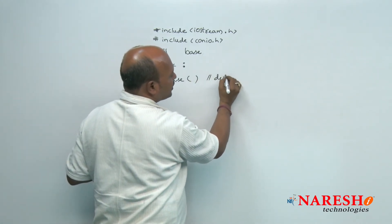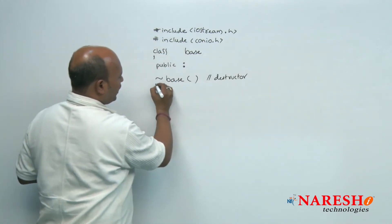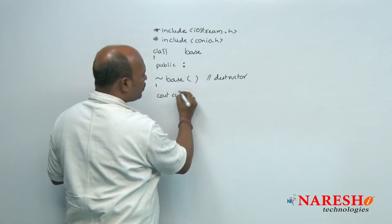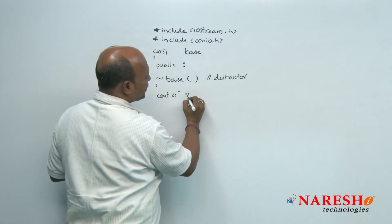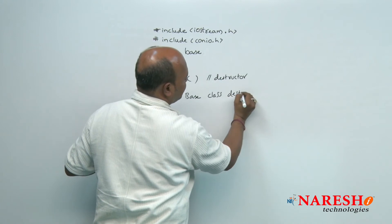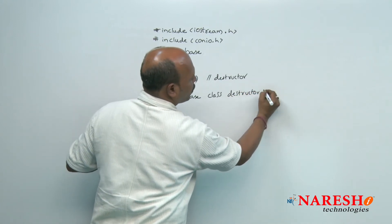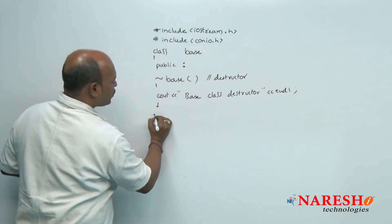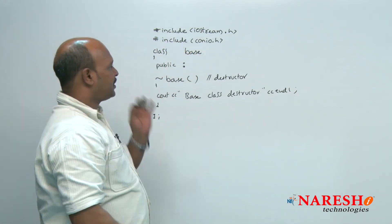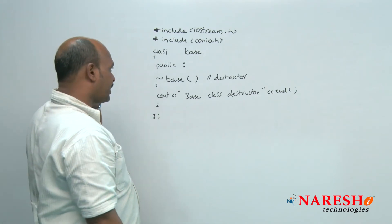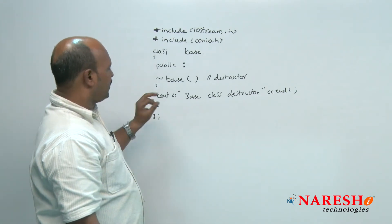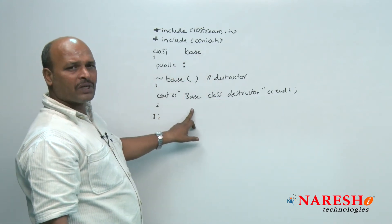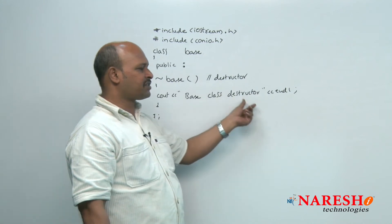Now it is the destructor. I am going to write a simple statement: cout << "base class destructor". That is all. The class is now completed — very simple: class name base, public section, and here it is the destructor of the base class having only one statement printing "base class destructor".